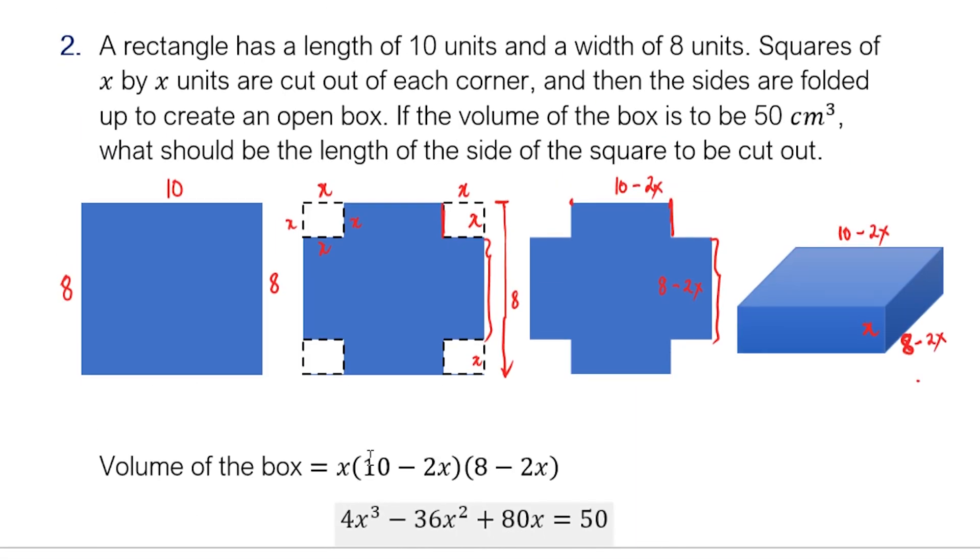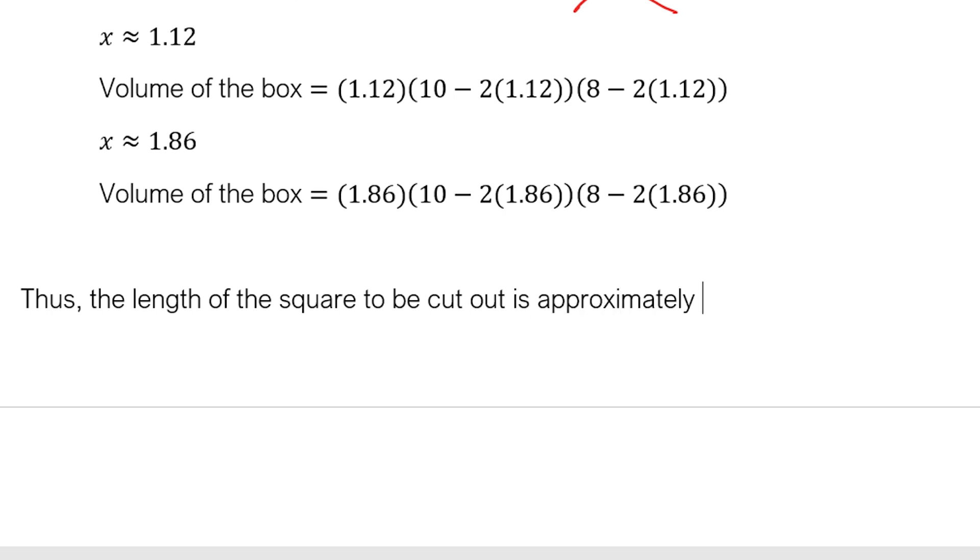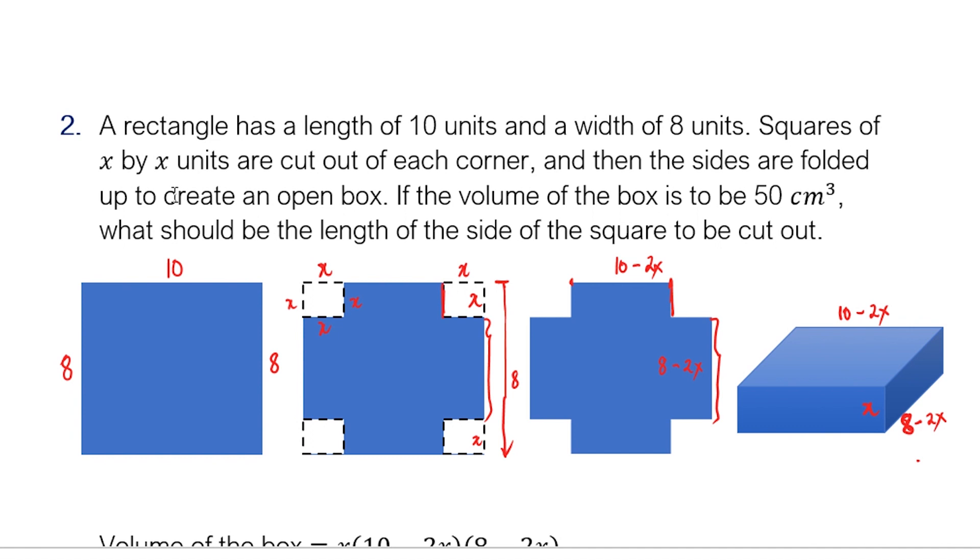Let's go back. What's the question again? We're going to look for the length of the sides of the square to be cut out. So thus, the length of the square to be cut out is approximately 1.12 centimeters? I think it's centimeters. 1.12 units.